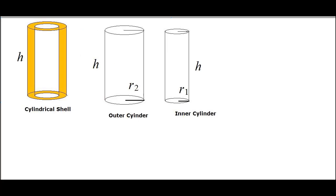If you look at this cylindrical shell, this is the outer cylinder and this inner one is taken out here. Pretend that the radius of the inner cylinder is R1 and that of the outer cylinder is R2.